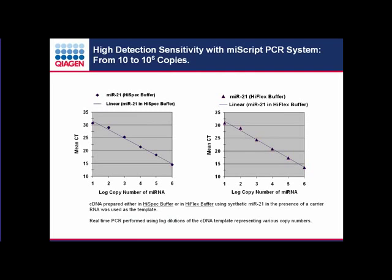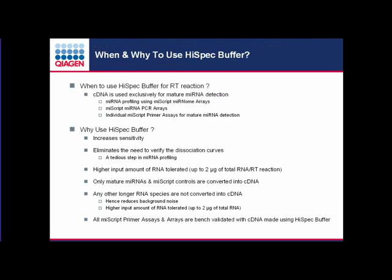The miScript PCR system has high detection sensitivity — one can detect as low as 10 copies to as high as a million copies of a microRNA. This was demonstrated using synthetic miR-21 at 10^2 to 10^8 copies in the presence of carrier RNA, prepared as cDNA in either high-spec or high-flex buffer and serially diluted. This is important because in a given cell, microRNA expression can range from as low as 10 copies to as high as 35,000 copies per cell.